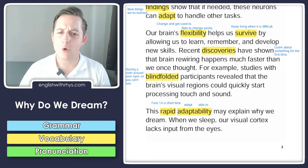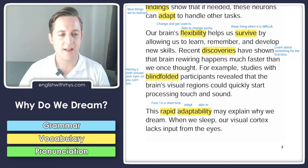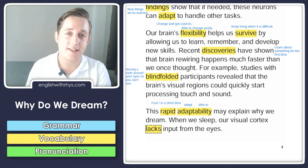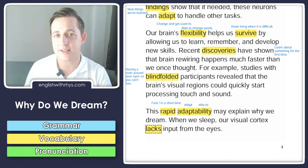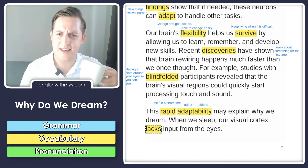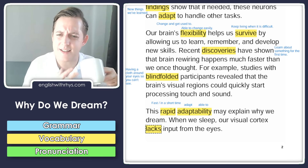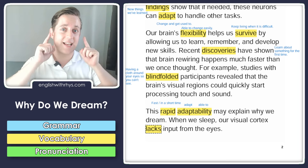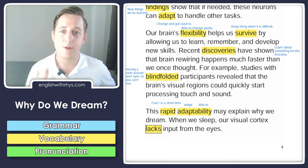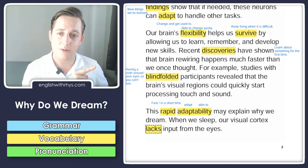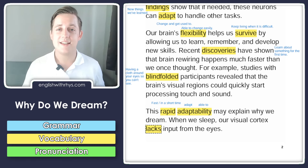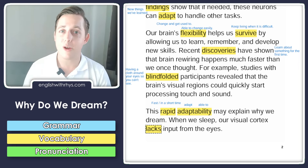When we sleep, our visual cortex lacks input from the eyes. 'Lacks' means it doesn't have input. For example: maybe you lack confidence when you speak in public — you don't have confidence. Or: this coffee is lacking something — it doesn't have something. 'Input' is information that comes in. You're watching a video right now — you're hearing my voice, seeing me, seeing the article — that's a lot of input, a lot of information coming in. It is very important to get as much input as possible when learning a language.